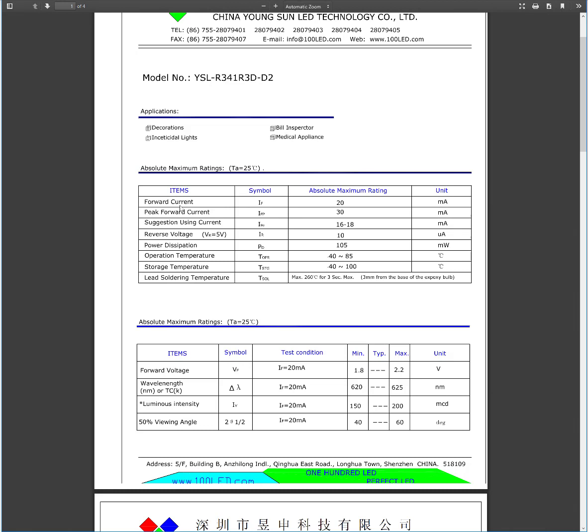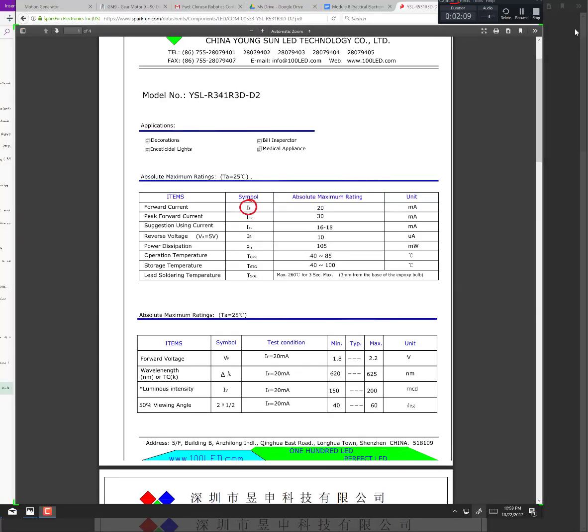If you come down here, we can see that the forward current is 20 milliamp, which is very small. We want to make sure that the current flowing through this LED will not be more than 20 milliamp. This is an important rating—the forward current being 20 milliamp. Peak forward current is 30 milliamp, so that's the maximum it can take. Let's come down and look at the forward voltage. The forward voltage here is minimum 1.8 volt and maximum is 2.2. Typical is not given.